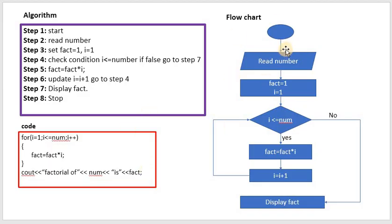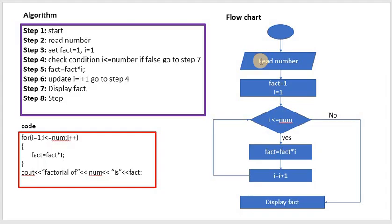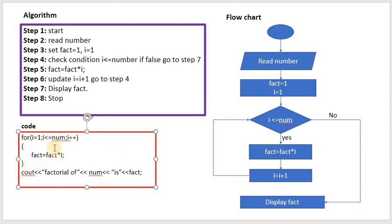Now the flowchart: start, read number, fact equal to 1, i equal to 1. Step 4: check condition i less than or equal to num. If false, display fact. If yes, fact is equal to fact into i, then i is equal to i plus 1 and loop back. Be aware of the shapes — input and output should be in a parallelogram, and process steps in a rectangle. The code uses a for loop: i equal to 1, i less than or equal to num, i plus plus, with fact equal to fact into i inside the loop.